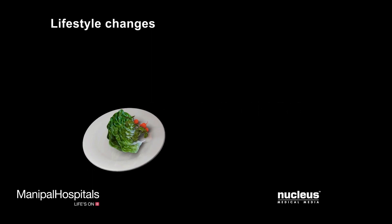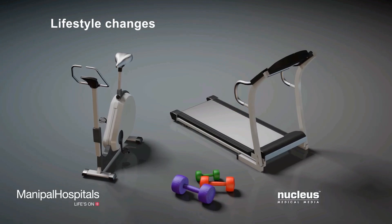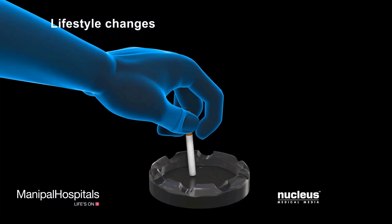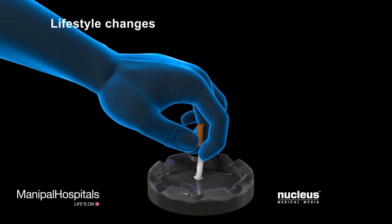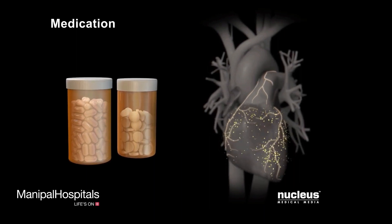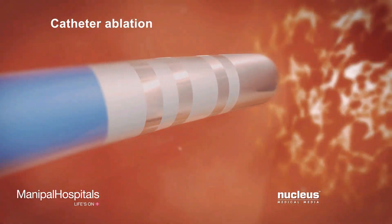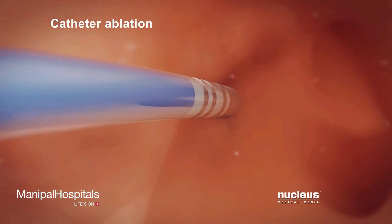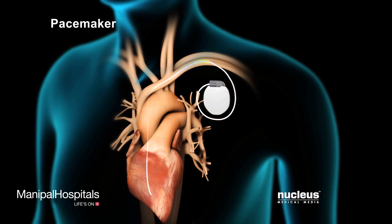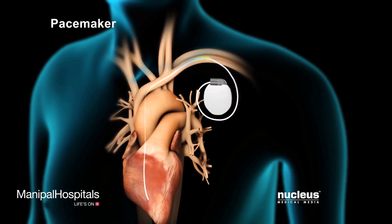Depending on the type of arrhythmia, a doctor may recommend one or more of the following treatments: lifestyle changes, such as eating a heart-healthy diet, exercising, and quitting smoking; medication, such as antiarrhythmic drugs and beta blockers; catheter ablation, where thin wires inserted into the heart destroy the tissue causing the arrhythmia with hot or cold energy; and implantable devices, such as a pacemaker or defibrillator, to correct the pace or rhythm of the heart.